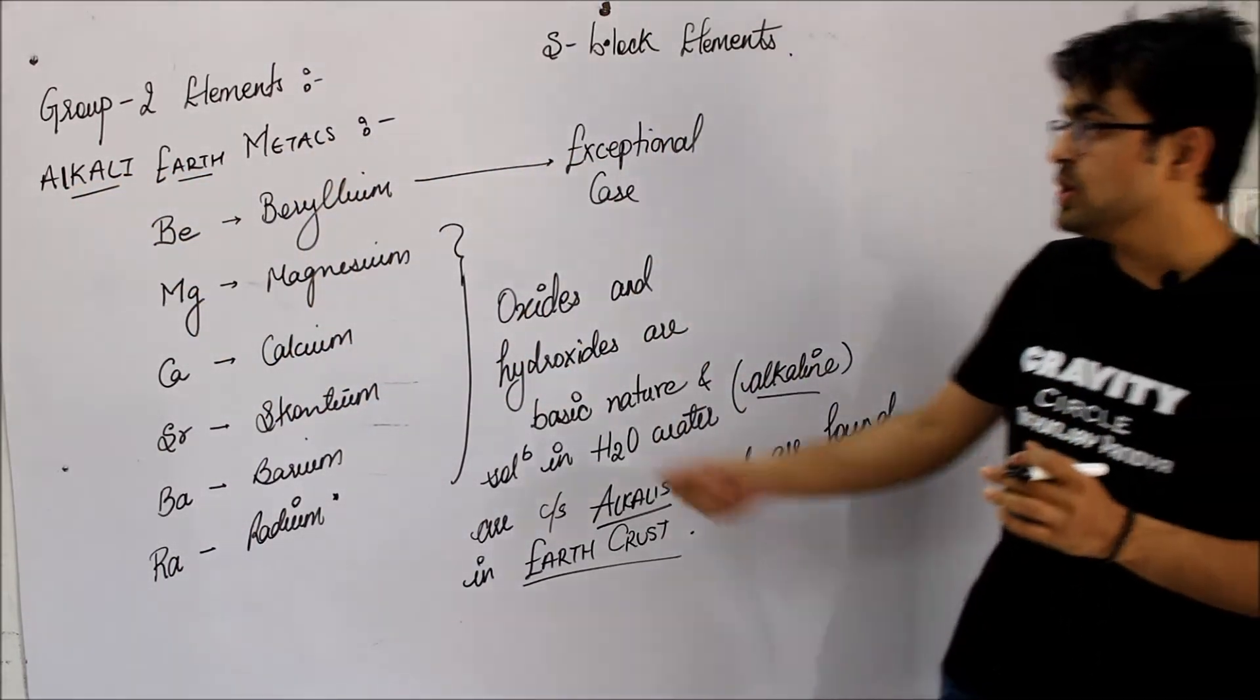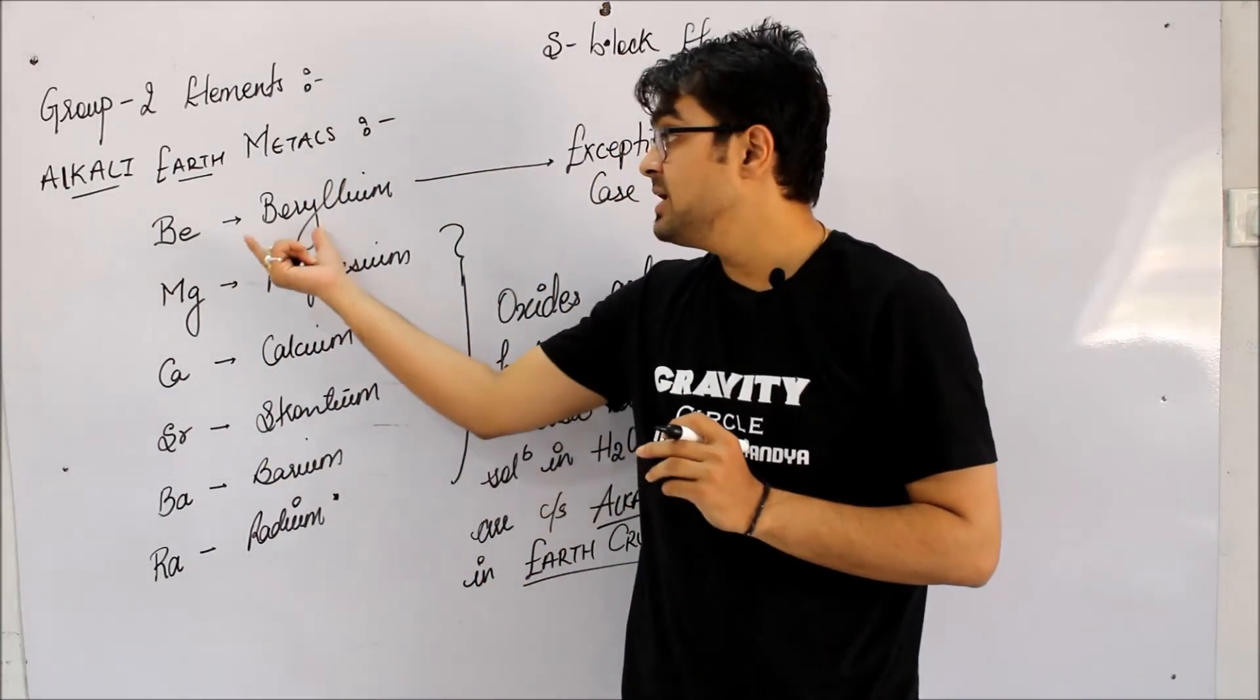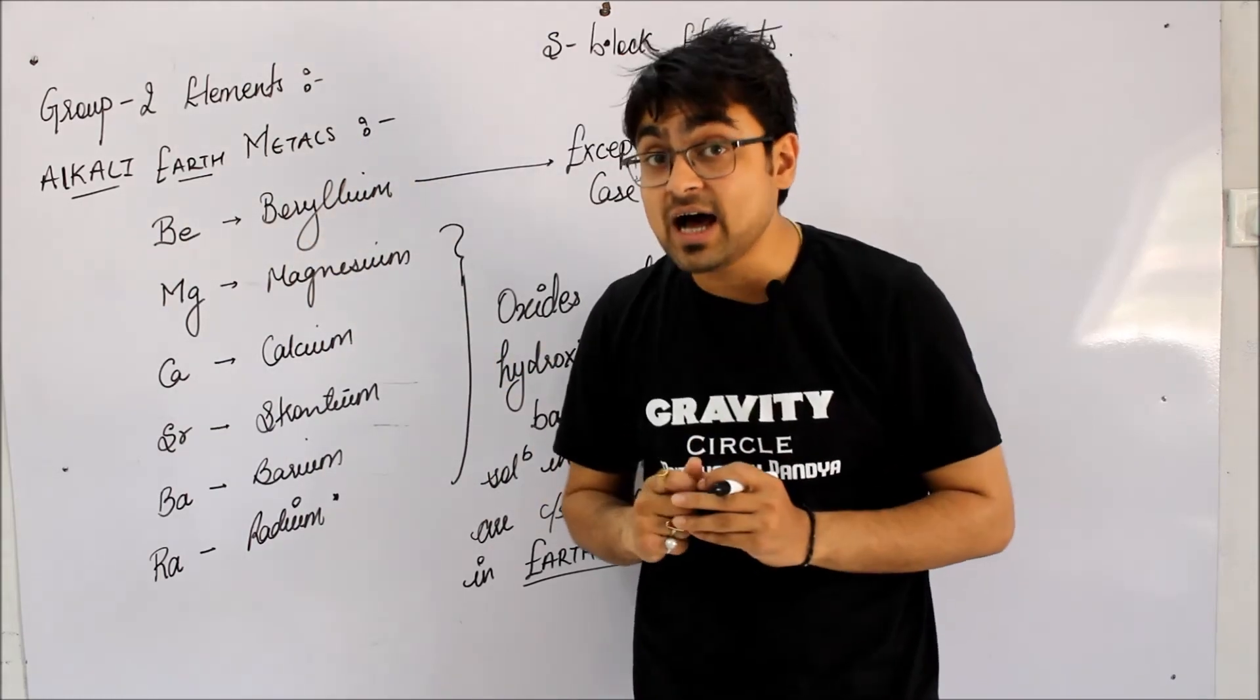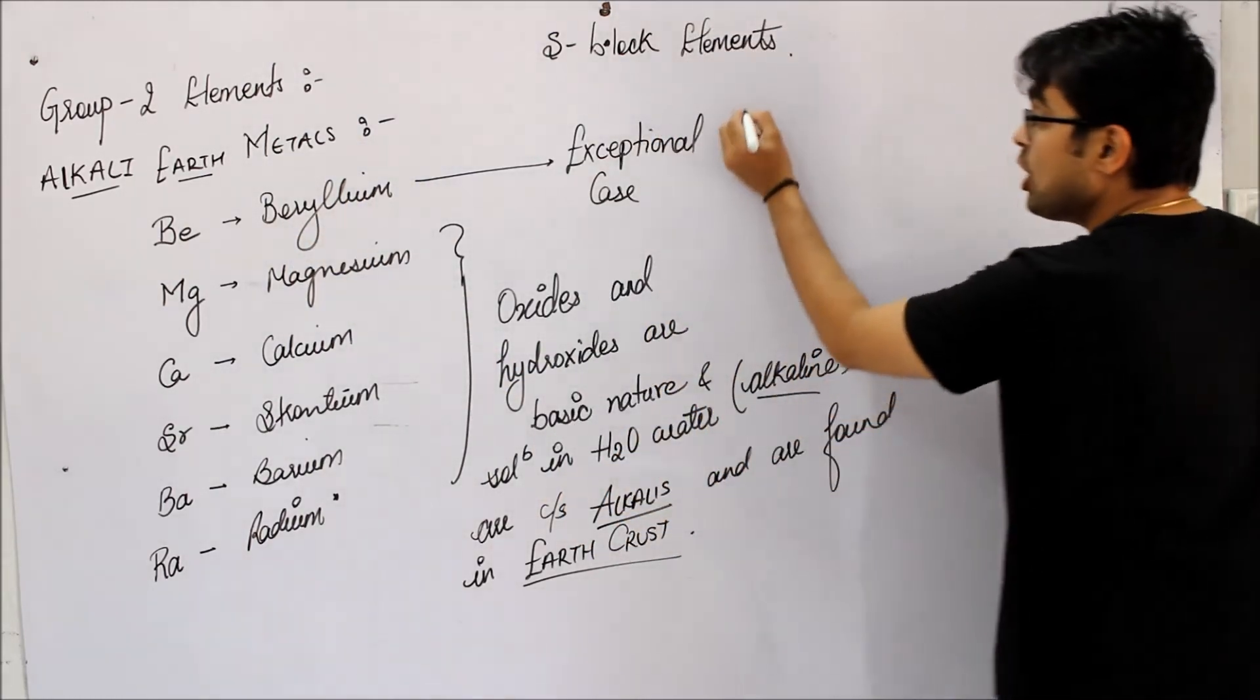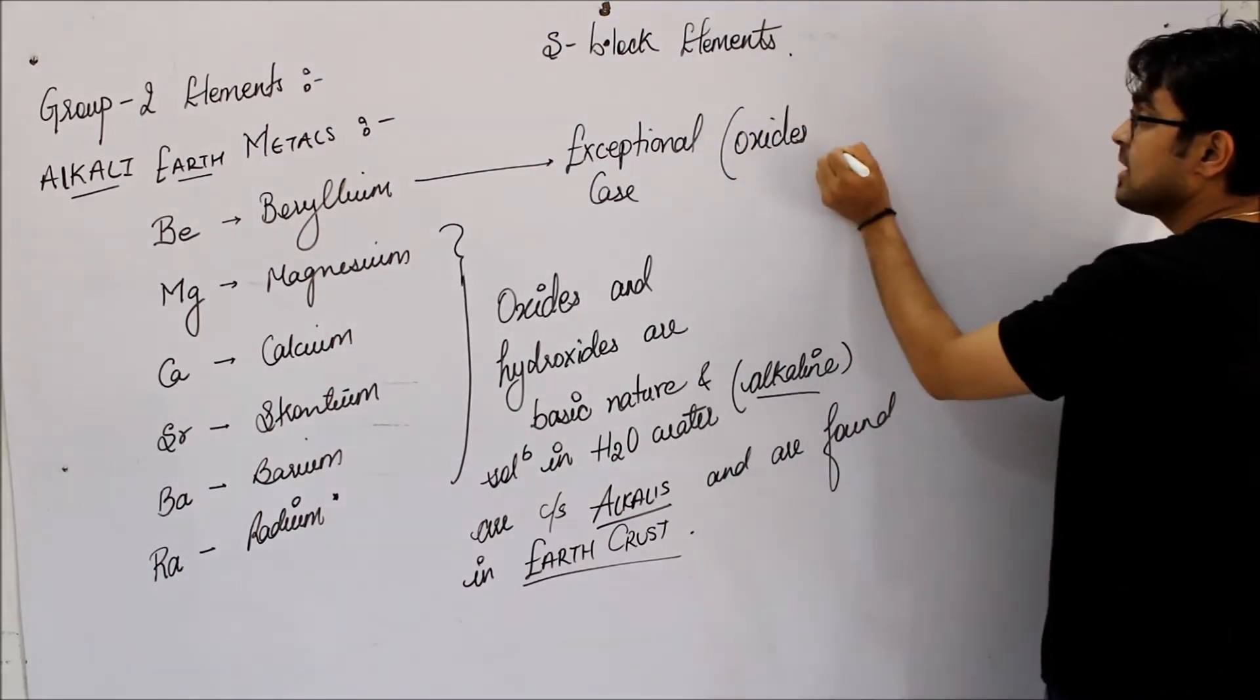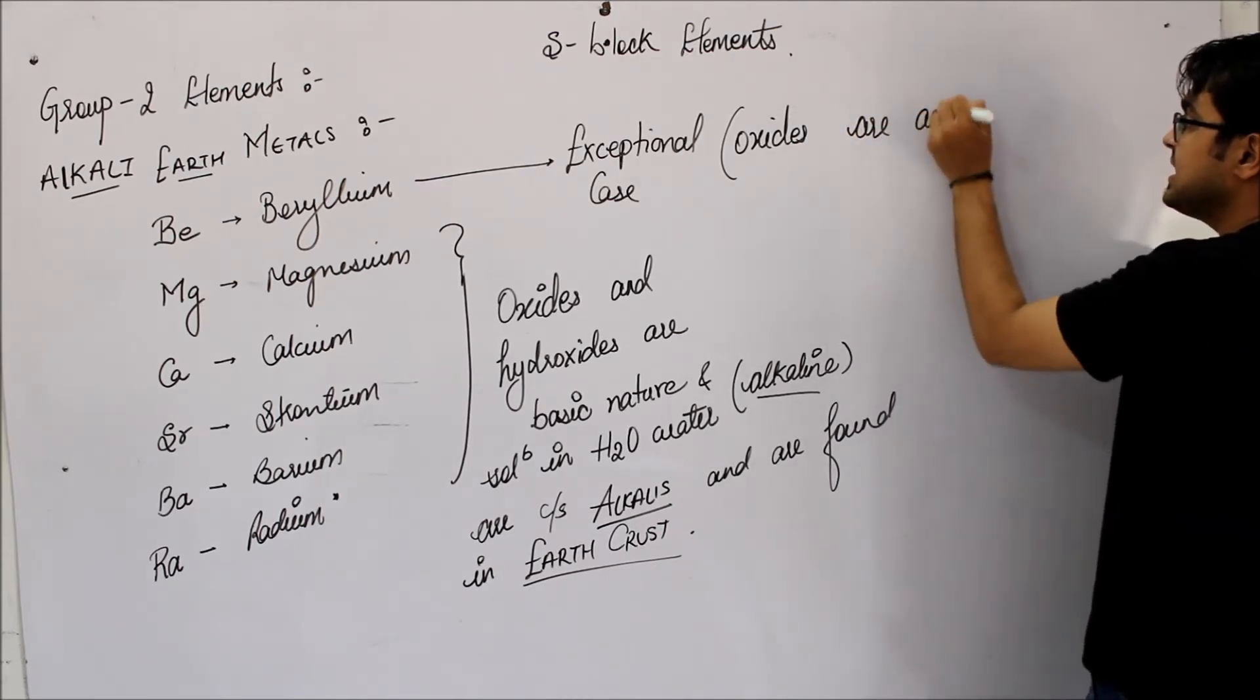Although it is included in this group because its electronic configuration is the same, it is never called an alkali earth metal because its oxides and even hydroxides are amphoteric in nature. They are basically having amphoteric nature.